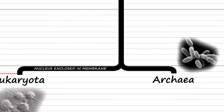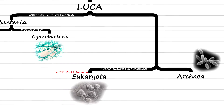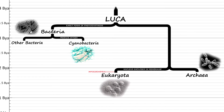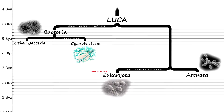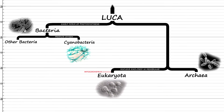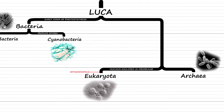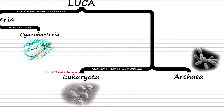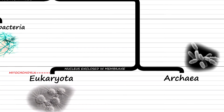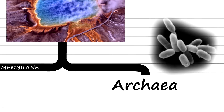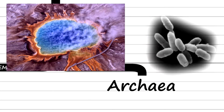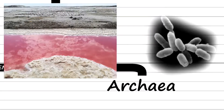They evolved different ways of acquiring energy which are more similar to eukaryotes than bacteria. Some archaea, known as extremophiles, live in extreme environments which were once thought to be inhospitable for life, such as hot springs and salt lakes.